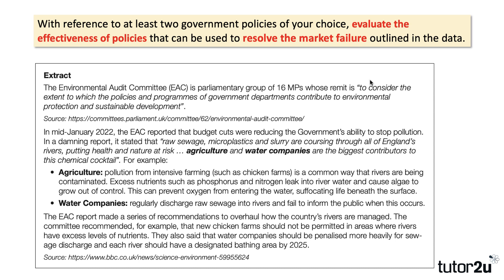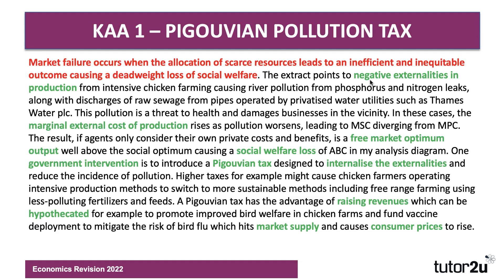Clearly there are some externalities here from production. The question is: with reference to at least two government policies of your choice, evaluate the effectiveness of policies that can be used to resolve the market failure outlined in the data. Key to this is to understand the market failure first of all, build that strongly into the answer, and also talk about relative effectiveness. Here's my first KAA paragraph — my knowledge, application and analysis paragraph.